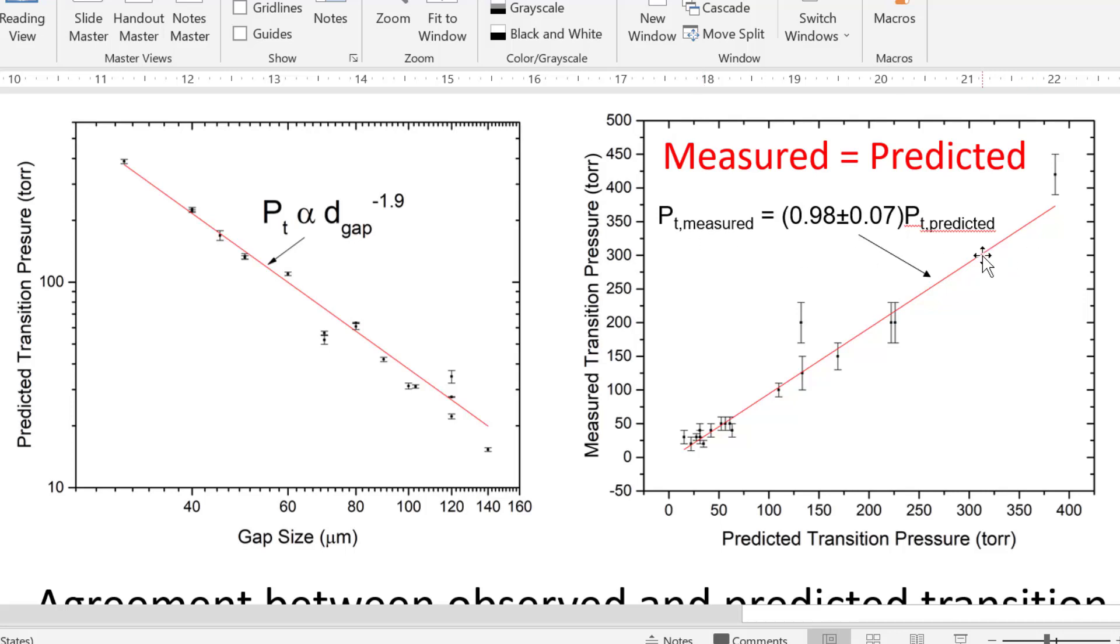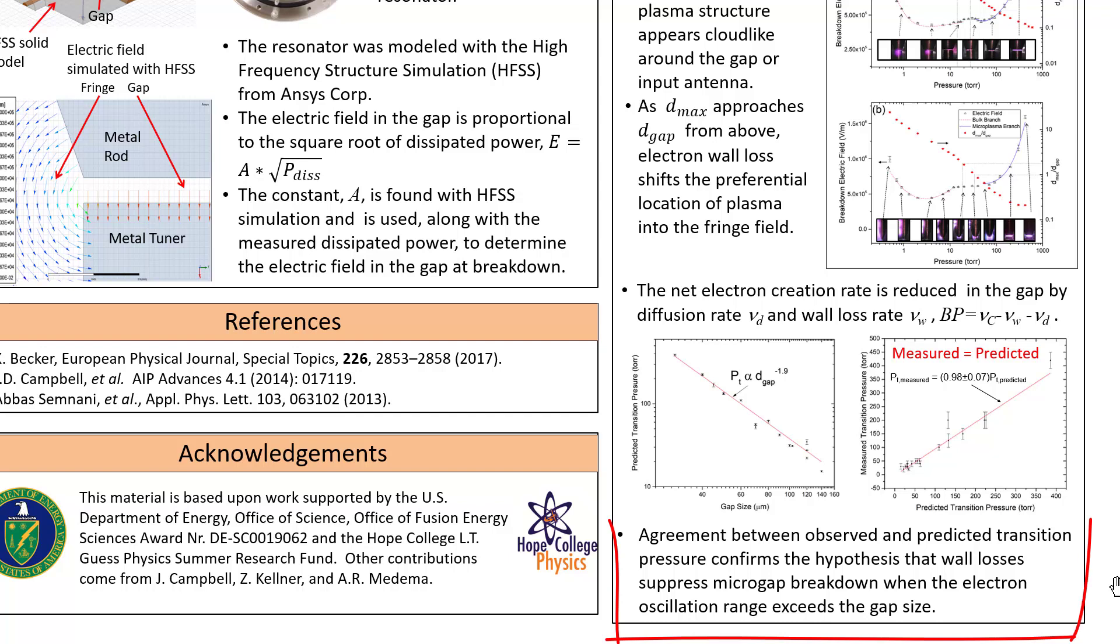Measured transition pressure versus predicted transition pressure is a line with a slope of one to within uncertainty. So the hypothesis we made that wall loss will suppress micro-gap breakdown when the electron oscillation reaches the size of the gap is confirmed by agreement of the measured transition pressure with that predicted using the collision frequency per torr parameter B.